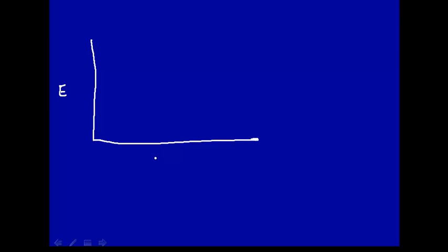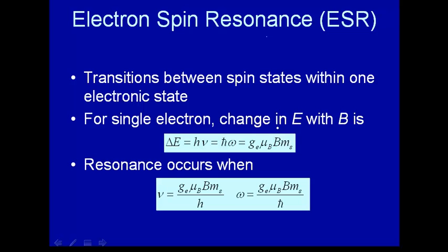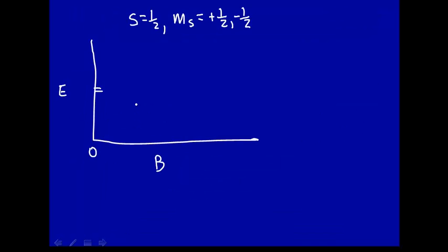Let's look at the energy of those spin states as a function of magnetic field B. When the magnetic field is zero, and considering the case where S equals one-half, M_S can be two values: plus one-half and minus one-half. For a single unpaired electron, those two values are equal in energy. But as we increase the magnetic field, the splitting increases proportionally — one energy level goes up proportionally with B, the other goes down proportionally with B.